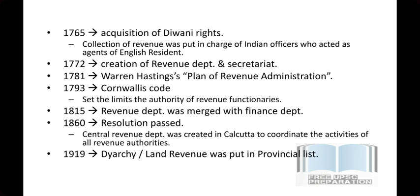In 1765, after the Battle of Buxar, the company acquired the Diwani rights. The work of revenue collection was put under an Indian officer who acted as an agent of an English resident. In 1772, the revenue department and secretariat was created. In 1781, Warren Hastings had a very important plan for revenue administration with many important changes. Then in 1793, the Cornwallis Code came — very important for civil service and revenue administration, as revenue function was put in authority through it. In 1815, the revenue department was merged with the finance department.